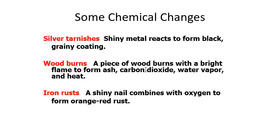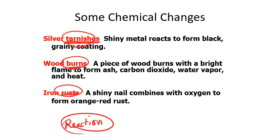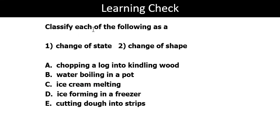I want you to pay attention: whenever we have chemical changes, these terms represent them — tarnishing, burning, rusting, reacting. These are terminologies we use to represent chemical changes. Now I want you to think about these examples as a learning check. The question says: classify each of the following as a change of state or change of shape — all of them are physical changes because we are either changing state of matter or changing shape. Think about it, then I'll talk about each one.